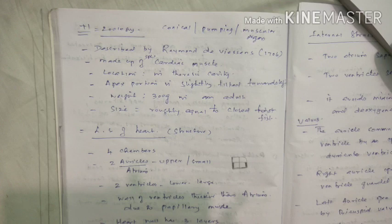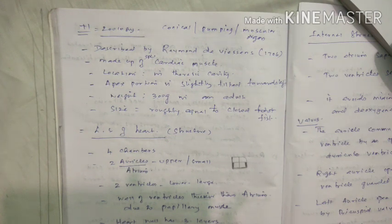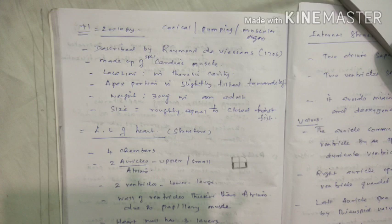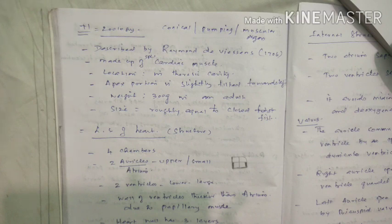The location of the heart is in the thoracic cavity. More exactly, the heart is present in the mediastinum, which is the gap between the two lungs. So the heart is located in the mediastinum — the gap between the two lungs.